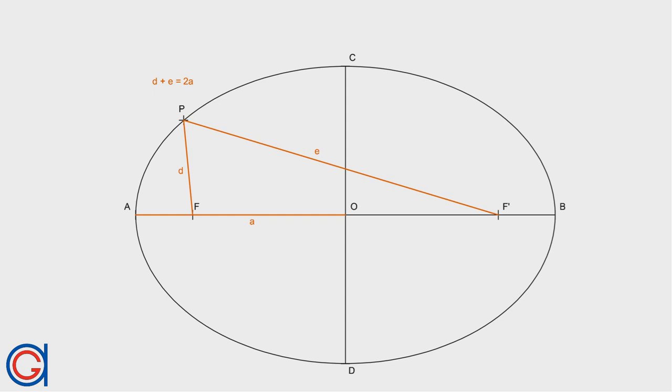An ellipse is a curve in a plane surrounding two focal points such that the sum of the distances to the two focal points is constant for every point on the curve.